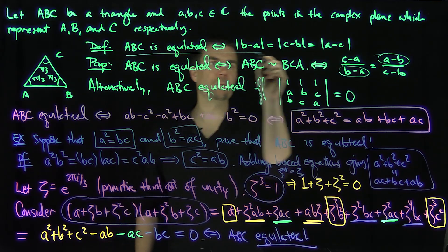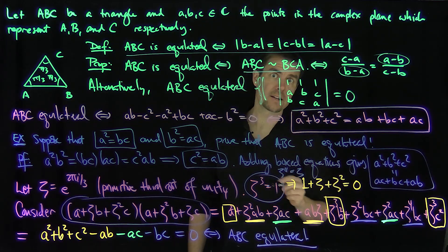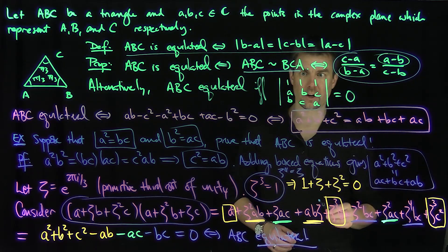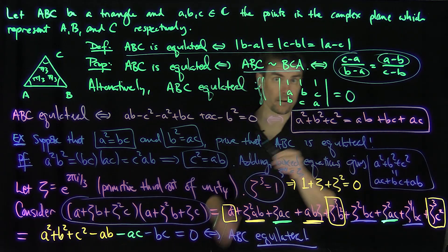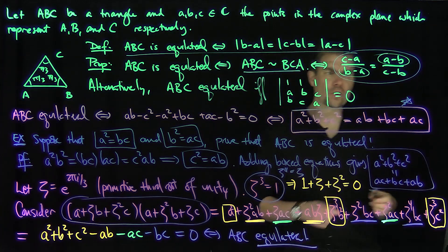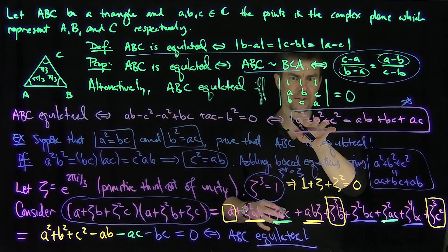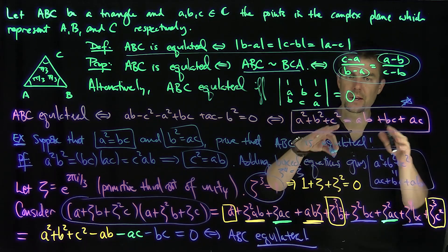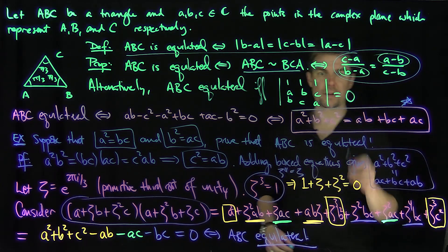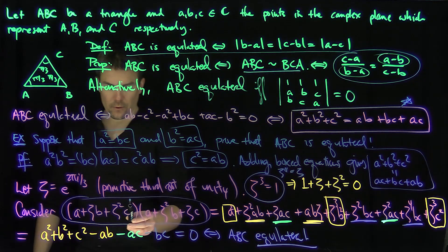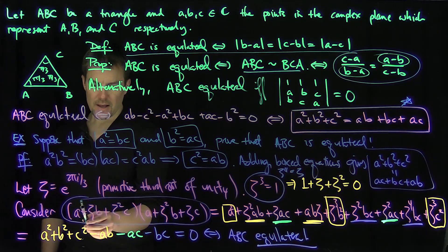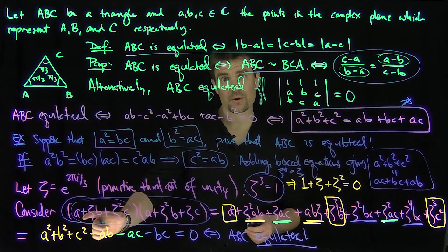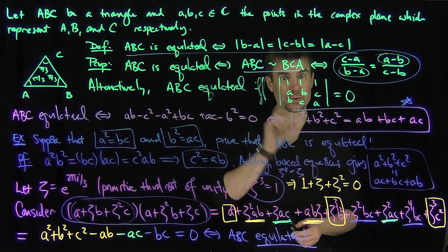So we now have several equivalent conditions: the definition via equal side lengths; the cyclic similarity condition, which yields a special cross ratio; the determinant formulation; and the symmetric polynomial condition A² + B² + C² = AB + BC + AC. This last condition appears frequently. Moreover, setting the first factor A + ζB + ζ²C = 0 alone characterizes equilateral triangles, as we'll see in future videos. Thank you very much.